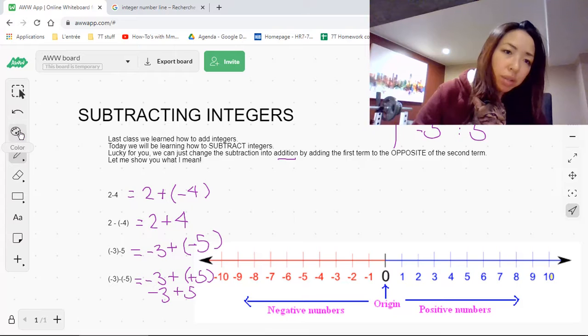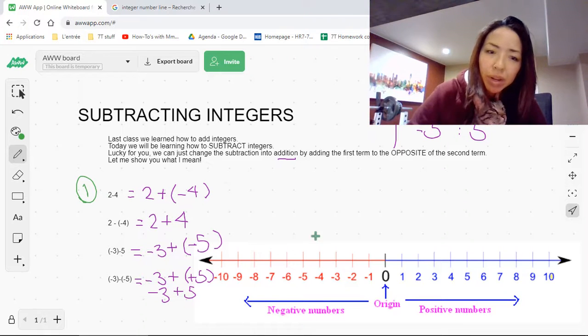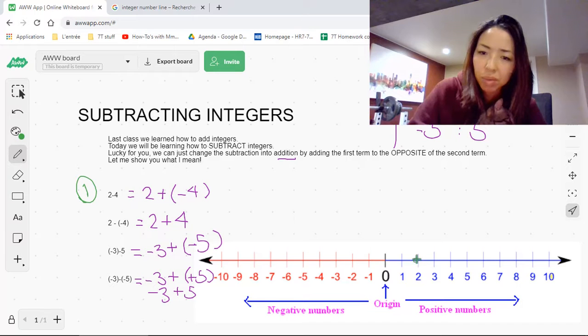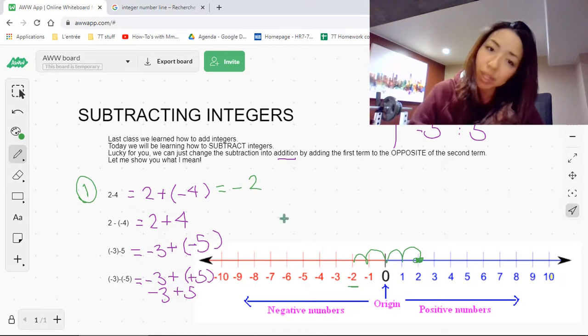Now you know how to do it by placing it onto the number line. So let's put them all onto the number line. Let's do number 1 in green. Number 1 is 2 plus negative 4. So let's start with 2 here. We'll plot 2 here. And since we're adding a negative, we're moving to the left 4 spaces. 1, 2, 3, 4. And we end up right here at negative 2. So 2 minus 4 or 2 plus negative 4 is negative 2.